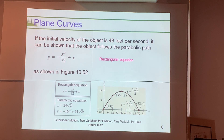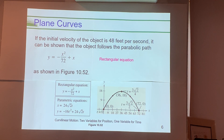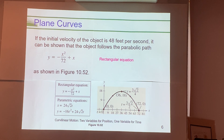Here is a rectangular equation — y equals negative x squared over 72 plus x — that would represent the path of this object, and that path is shown in this graph. If I graph y = −x²/72 + x, it would look like a parabolic curve. x represents the horizontal distance the object is away from us, and y represents the vertical distance.